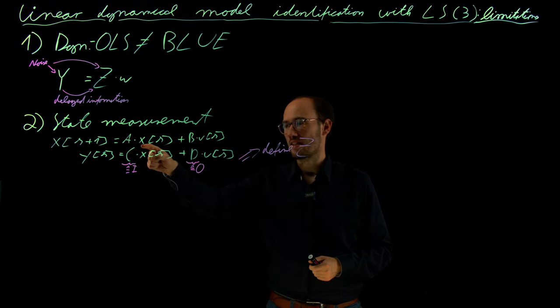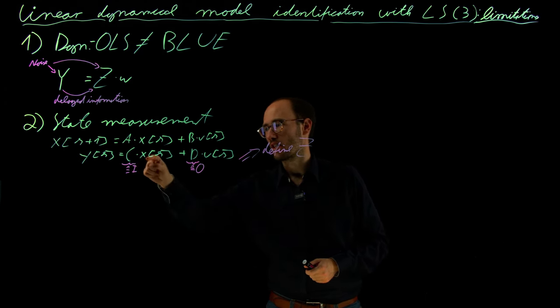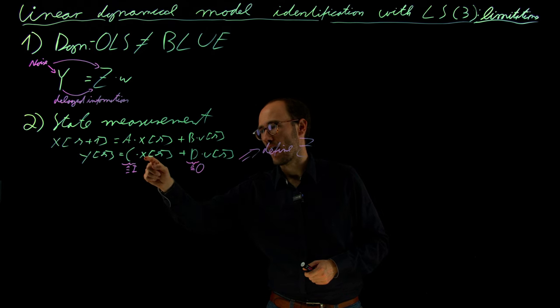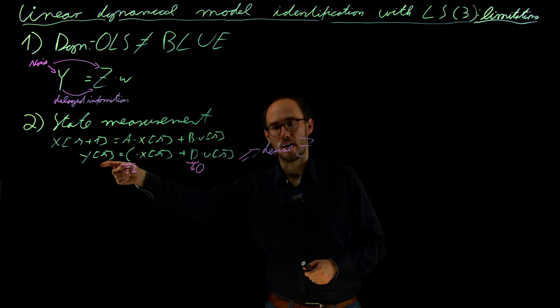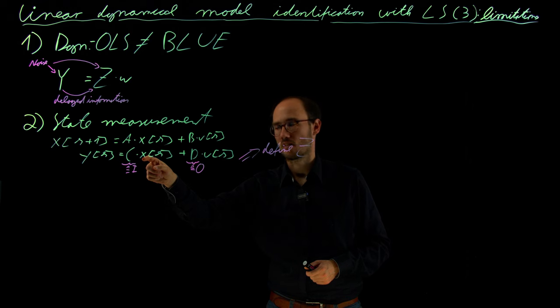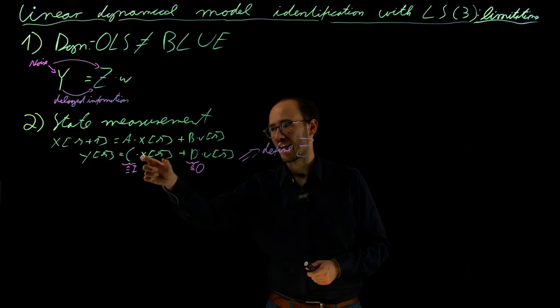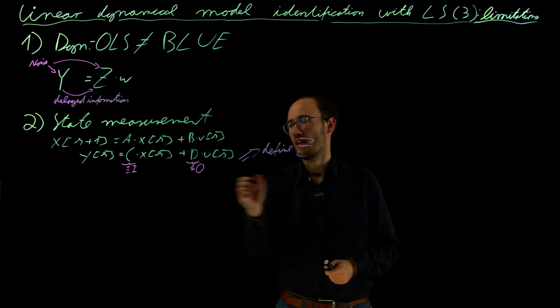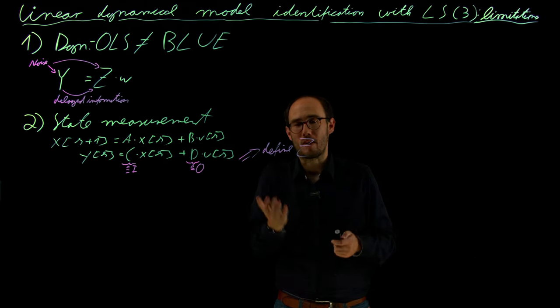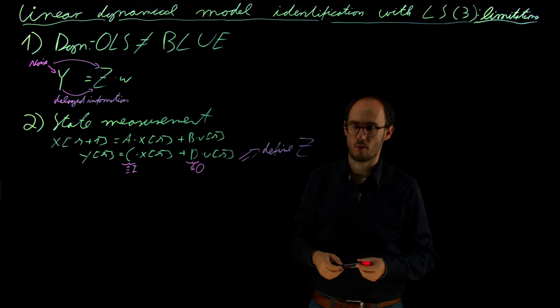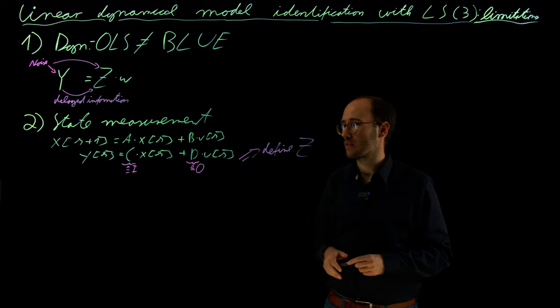We would need access to x in order to define especially this relation from x over C to y. If we do not have direct access to x, we get problems because x is definitely a part of z, and if that access is missing, we cannot define our least squares problem.